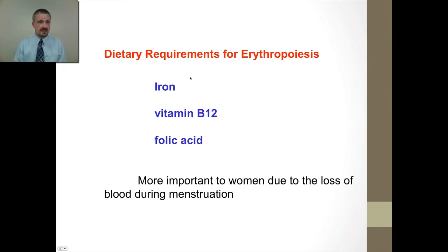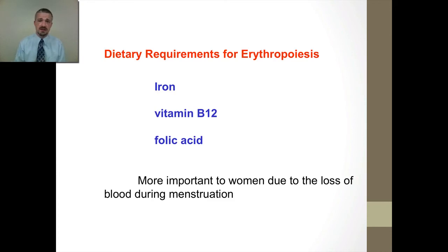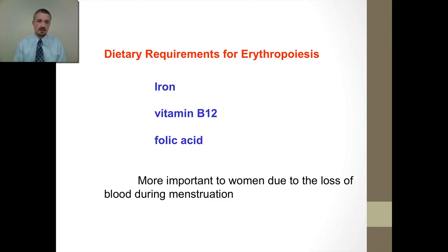Just getting EPO isn't enough - we do need certain things like iron, B12, and folic acid, all of which are required in order to make hemoglobin and make these red blood cells. If you're deficient in any of these, you are going to struggle to make functional red blood cells and replace the ones you're needing. A lot of times with women, this ends up being a bigger deal in the sense that menstruation - that monthly loss of blood - puts a larger requirement on women's systems for these dietary components, because they have to make red blood cells more often as each month they do lose a certain volume of blood.